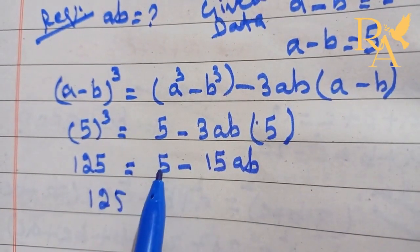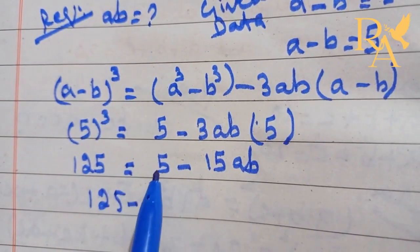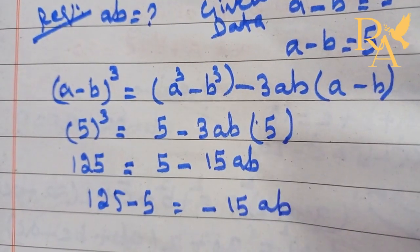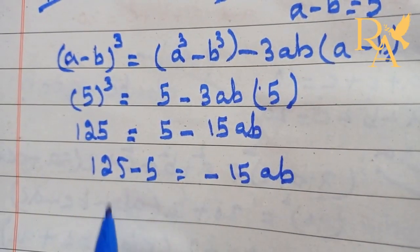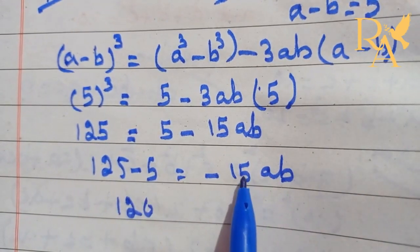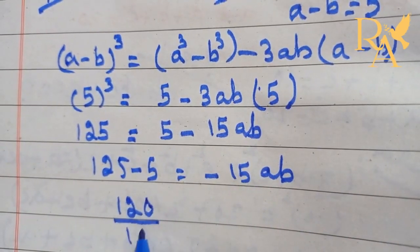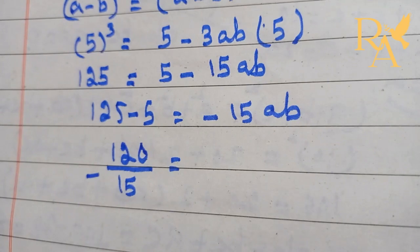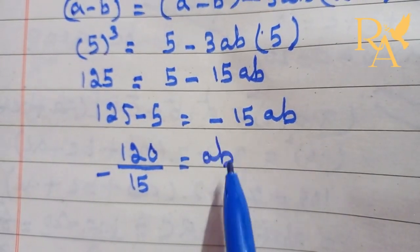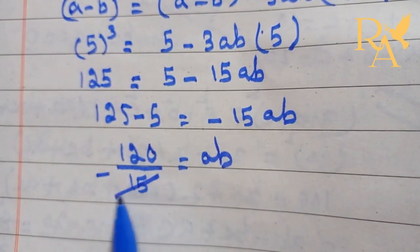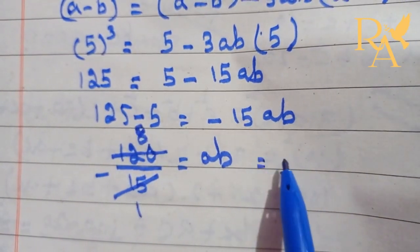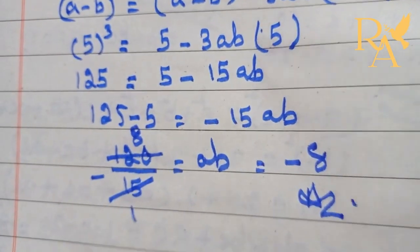125 minus 5, changing the sign, plus 5 becomes minus 5, equals minus 15AB. So 125 minus 5 is equal to 120. Dividing by minus 15 gives AB. 120 divided by minus 15 equals minus 8. So AB is equal to minus 8. This is the answer to the given data.